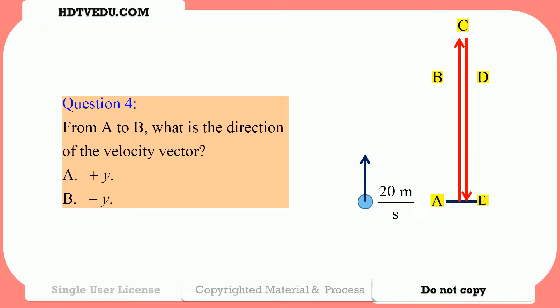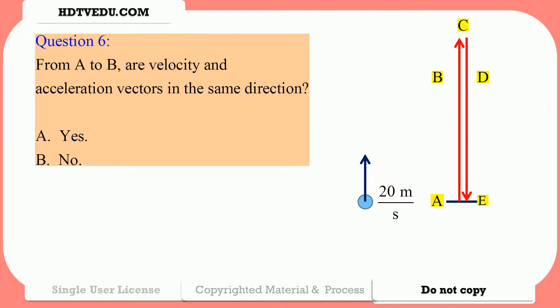Question number 4: From A to B, what is the direction of the velocity vector? Is it positive Y or negative Y? Question number 5: From A to B, what is the direction of the acceleration vector? Is it along positive Y or negative Y? Question number 6: From A to B, are velocity and acceleration vectors in the same direction? A: yes. B: no.